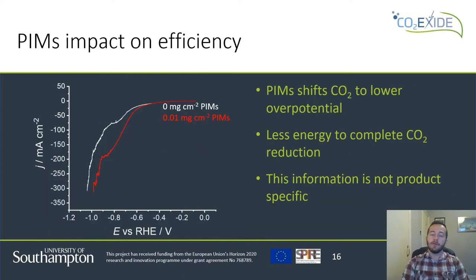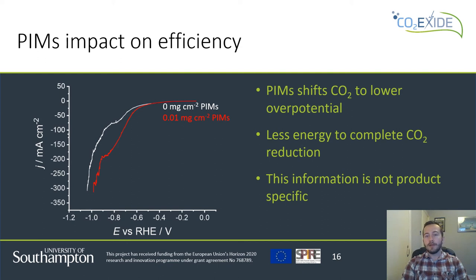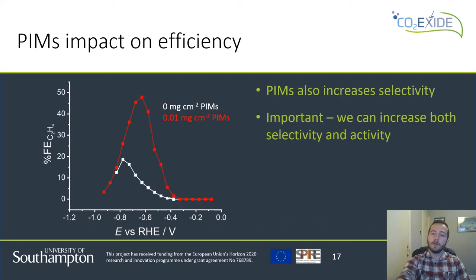We can see the impact of the PIMs layer on the voltammetry right away, where the added PIMs layer in red is shifting our carbon dioxide reduction wave to lower overpotentials versus the bare electrode shown in white. This is a promising start, but at the moment we're only looking at the general behaviour of carbon dioxide reduction at our electrode. What we really want to know is: does this affect the amount of ethylene we're getting with respect to the other possible carbon dioxide reduction products? If we replot our data in terms of the Faradaic efficiency, we can see that we do indeed get a pretty sizeable increase in the ethylene selectivity when we compare the PIMs-coated electrode in red to the bare electrode in white.